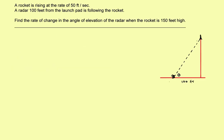This problem reads like this: a rocket is rising at the rate of 50 feet per second. There's a radar site over here that's 100 feet from the launch pad following the rocket, and the angle of elevation of the radar is changing to follow the rocket. Find the rate of change in the angle of elevation of the rocket when the rocket is 150 feet high.